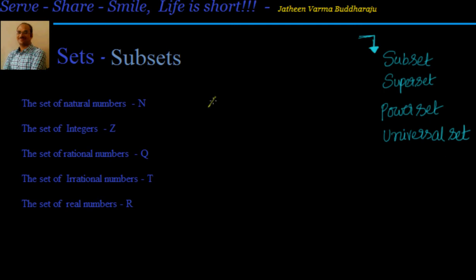Now to understand subsets let's take a very simple example. Let us say there are two sets which I am representing in roster form. Set A is having elements 2 comma 4 and set B is having elements 1 comma 2 comma 3 comma 4.